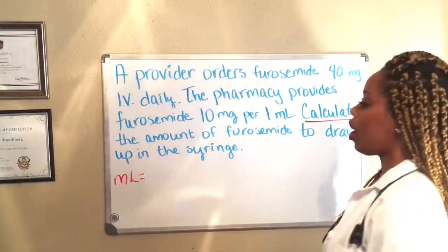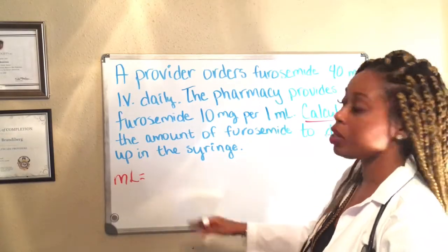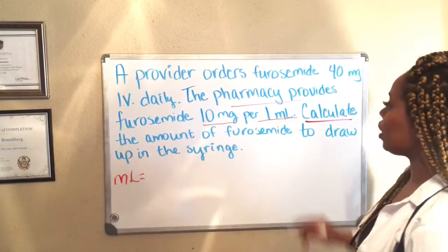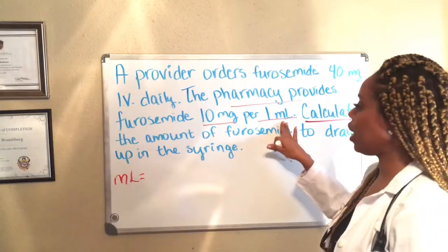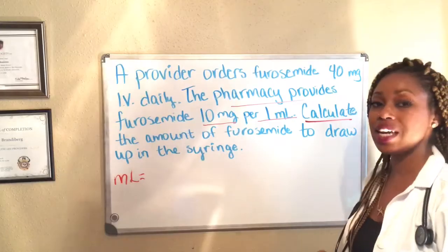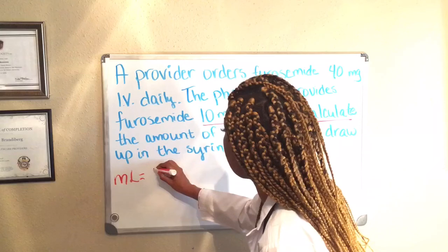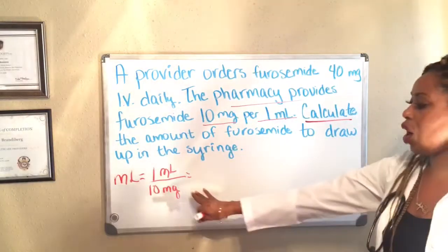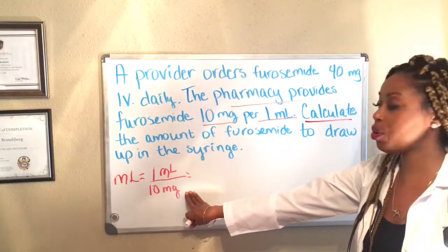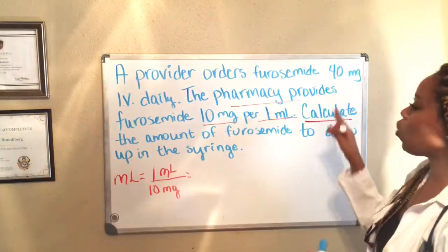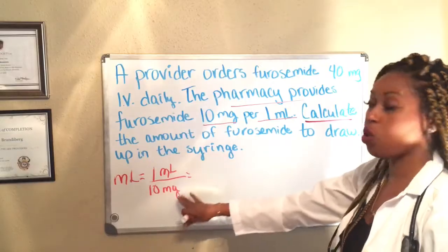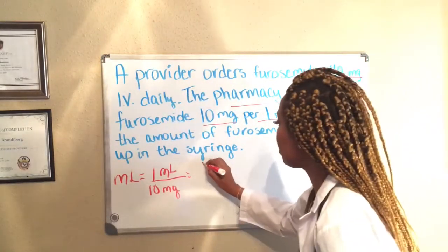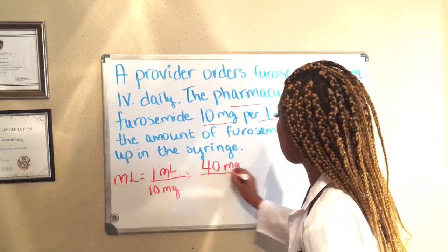I know that they are asking me for milliliters, so I'm going to set the equation up with milliliters — because at the end of my equation, this is the only thing I want to be left with. I go into my equation and see what I have as far as milliliters go. The pharmacy provides furosemide 10 milligrams per one milliliter, so I see they are giving me one milliliter per 10 milligrams. I plug in one milliliter per 10 milligrams. I need to get rid of milligrams, so I look back and see the provider is ordering 40 milligrams, so I put 40 milligrams over one.